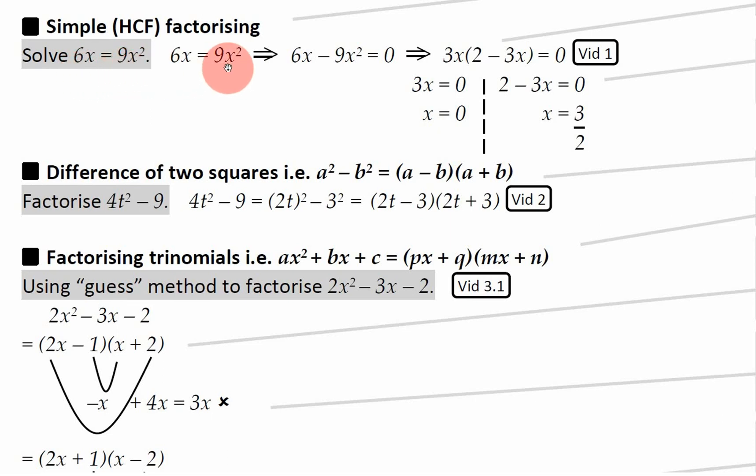The first stage is to rearrange your equation so it's equal to zero, like I've done here. So I've moved the 9x squared over to that side and I've got minus 9x squared. So you've got 6x minus 9x squared is equal to zero.